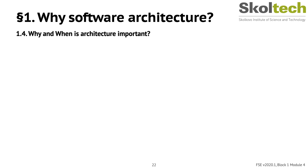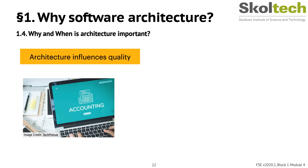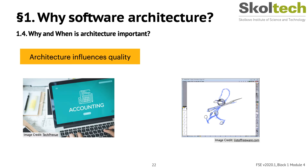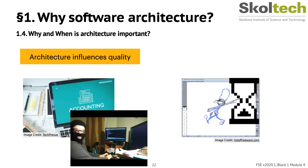Systems have additional requirements not related to their function, referred to as non-functional or quality attribute requirements. Architecture basically influences these quality attributes. Accounting software that fails to count or animation software that fails to animate is not useful, but developers must pay attention to quality attributes too. For example, accounting software that lets bad actors read secret accounts, or animation software that runs too slowly, is also not useful.